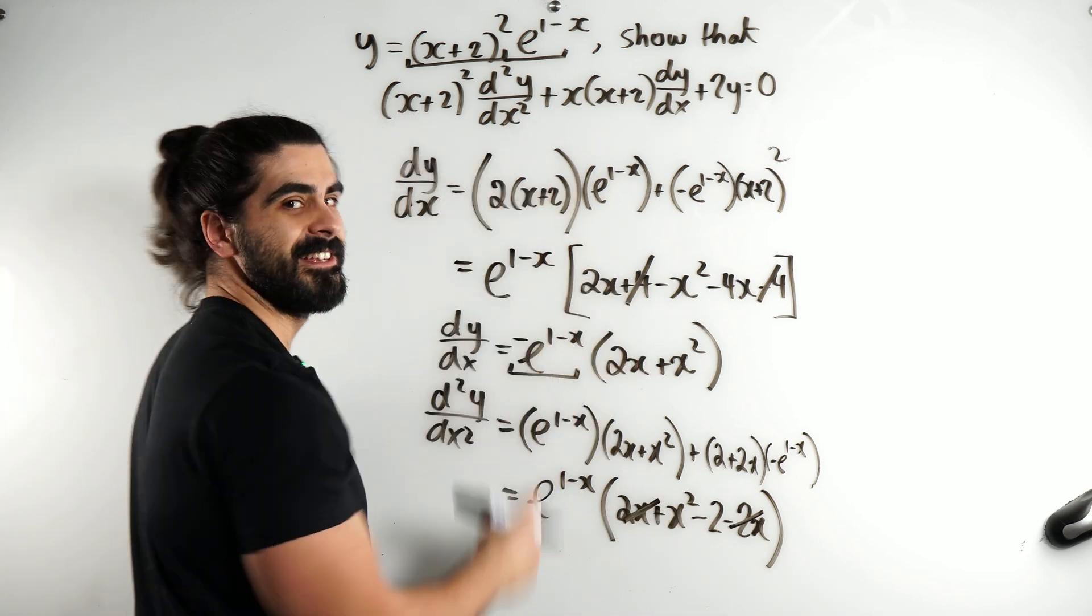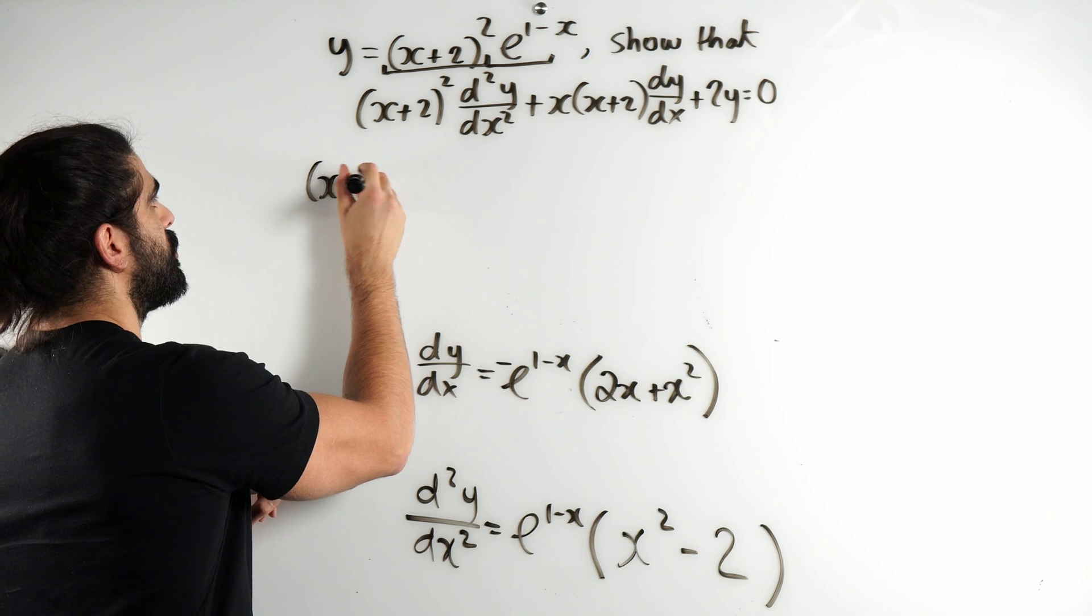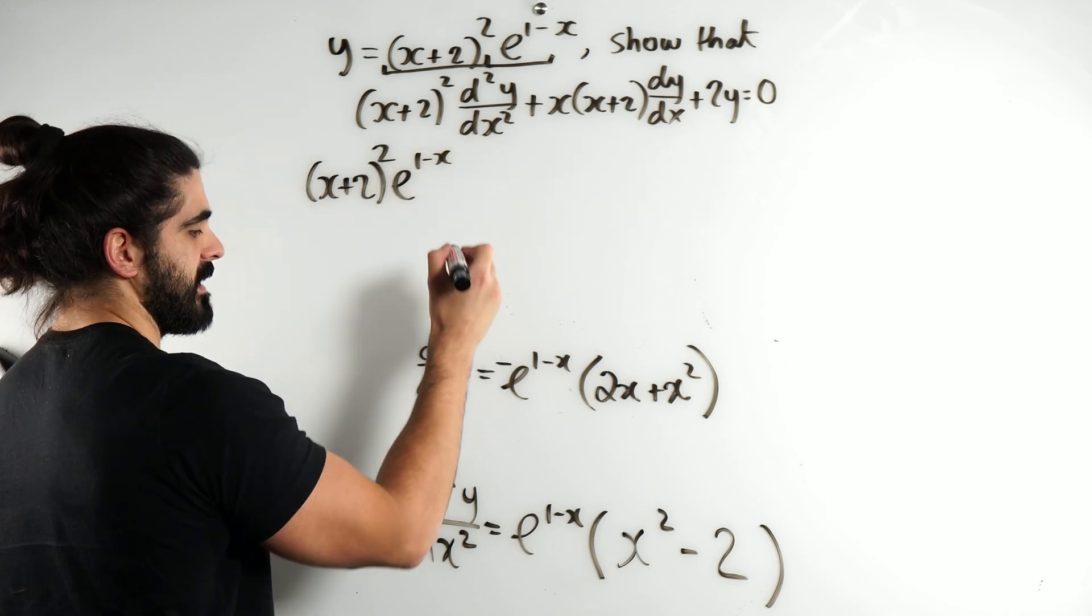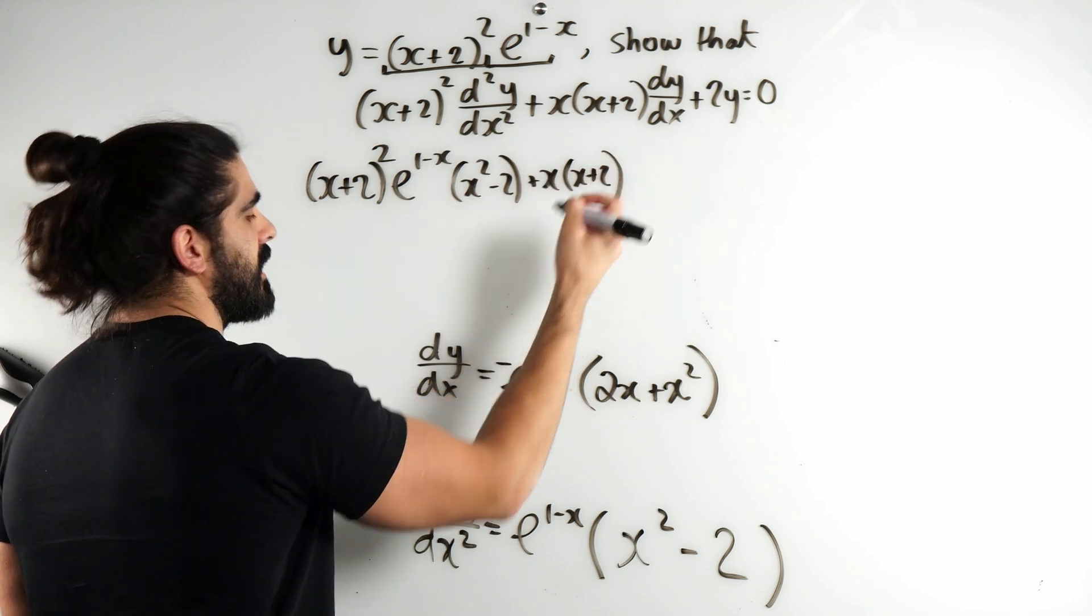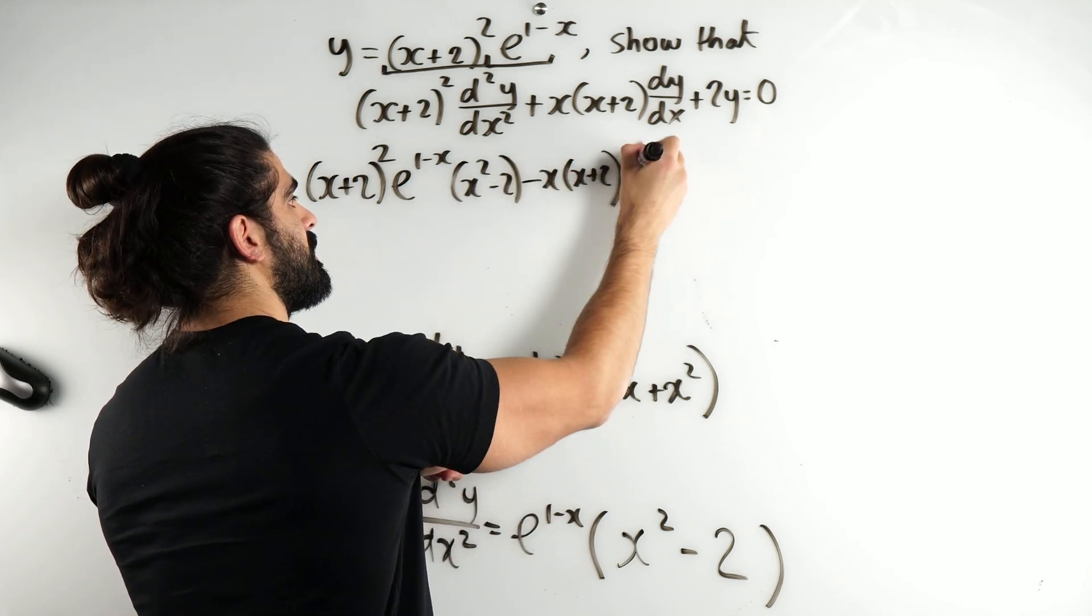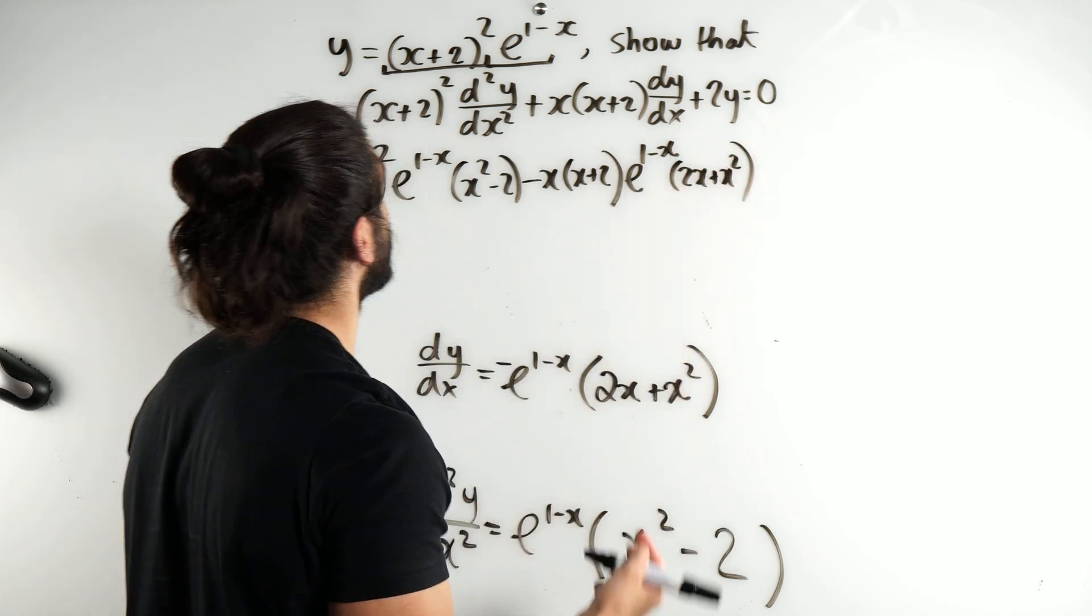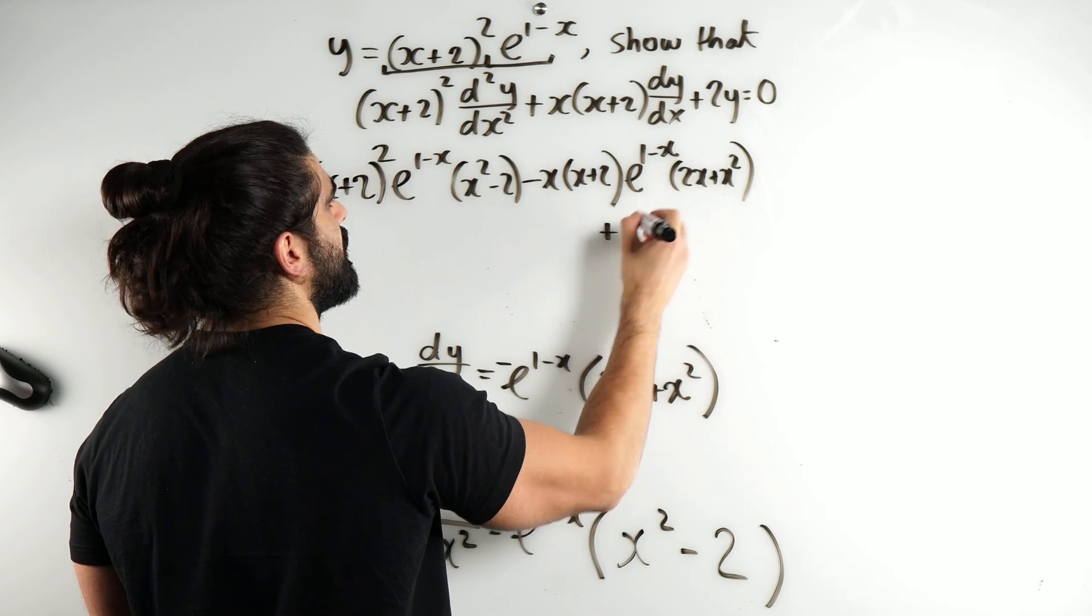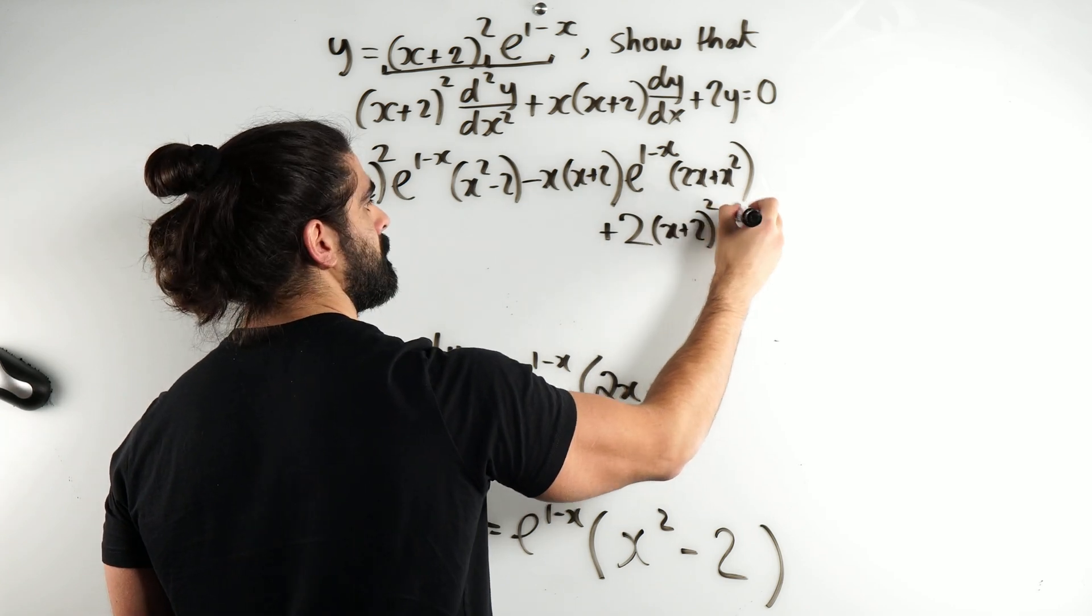Now, we're going to take all of this and sub it into there, and let's see what happens. Let's make our substitutions. So, I have x plus 2 squared dy dx, which was this. So, we have e to the 1 minus x times x squared minus 2 plus x, x plus 2 times dy dx, which was minus, right? So, this becomes minus e to the 1 minus x, 2x plus x squared plus 2y plus 2 lots of this. I'm conscious of TikTok not having much space, so I'm going to write plus 2y.